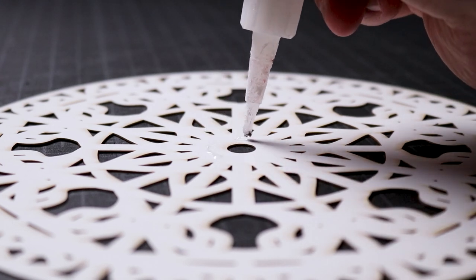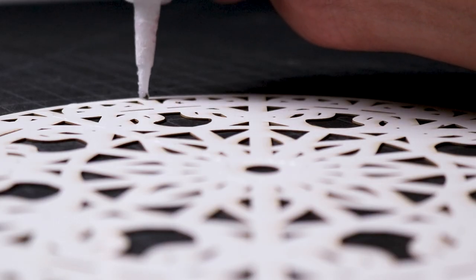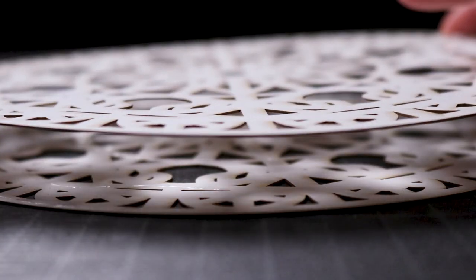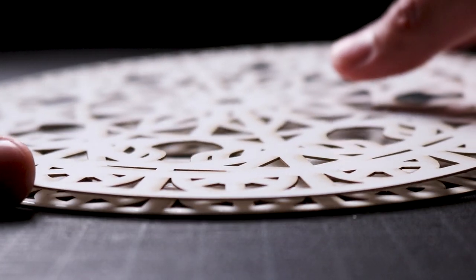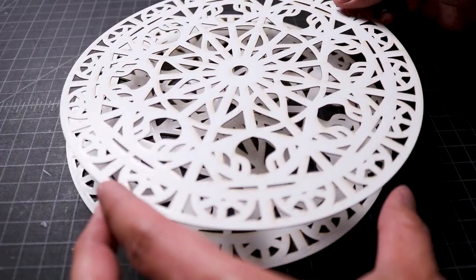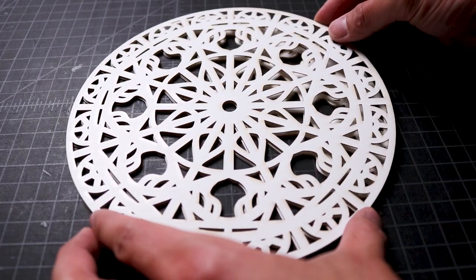I slowly applied the glue to the bottom layer around the perimeter, center, and throughout the patterns. I brought over the layer above, aligned it with the layer with glue, and pressed it into place. Then, I applied glue to the next layer in similar places as the previous one, brought over the next layer, and pressed it into place.